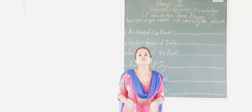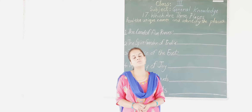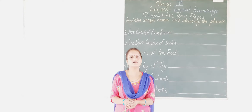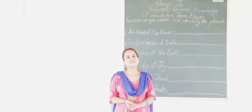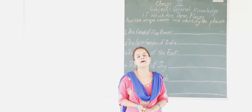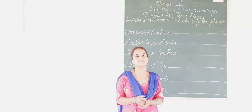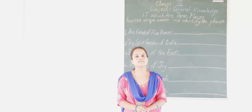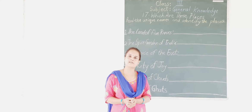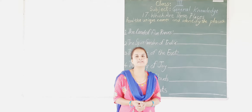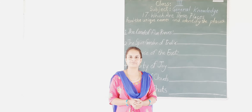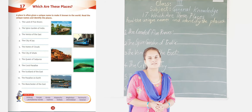We have studied in the previous session the parts of the world or the places in the world which are given different names. Like we have studied: the City of Lights is called Paris. In the same way, in this session there are different places in India which are called by their special names. Now let us study.